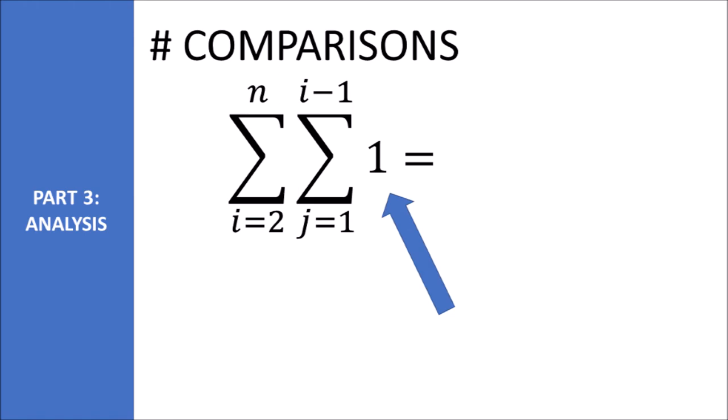We perform one single swap inside the inner loop. We iterate through the inner loop, starting at iteration one and ending at iteration i minus one. This results in a summation where we add one swap for each iteration from j equals one to j equals i minus one.